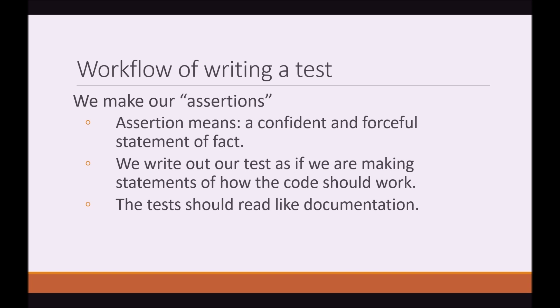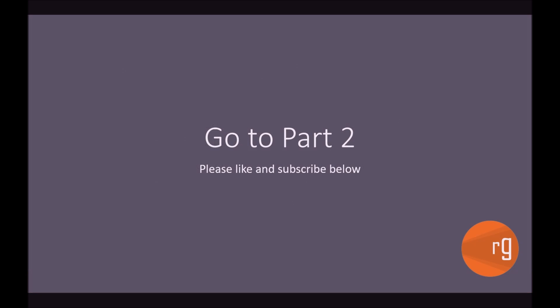What do we do when writing our tests exactly? We are actually making what's known as assertions. Assertion means a competent and forceful statement of fact. We write out our tests as if we are making statements of how the code should work — the tests should read like documentation for our code. So that's it for the theory. We're going to dive into the code in part two, so click on the annotation on screen or the link below.